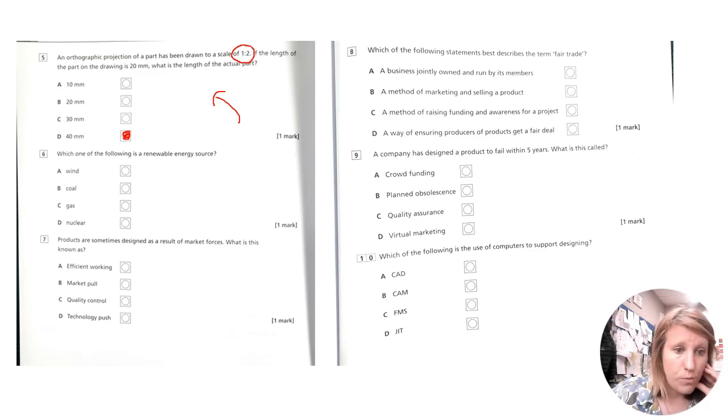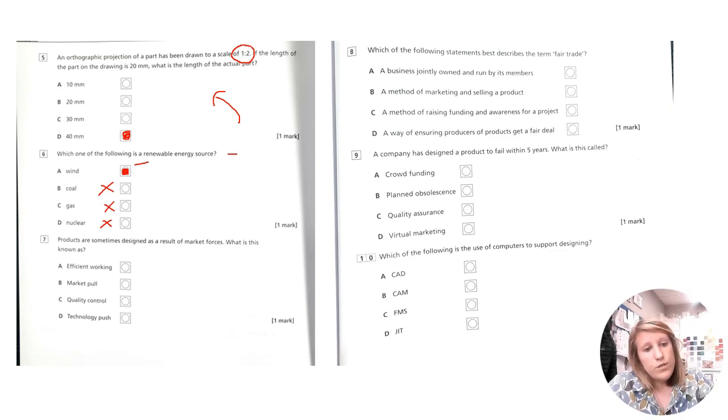Which one of the following is a renewable energy source? Easy again, but just make sure that you read it correctly. So which one of the following is a renewable energy source? Well, coal's not. Gas is not. Nuclear is efficient, but it's not because it's using things that are running out like uranium and things like that. So wind is your correct answer there. Products are sometimes designed as a result of market forces. What is this known as? If it's anything to do with markets, it's market pull. If it's anything like tech, like developments in materials or manufacturing methods, that would be technology push. So it's market pull, market pull, technology push. Make sure you know the difference.